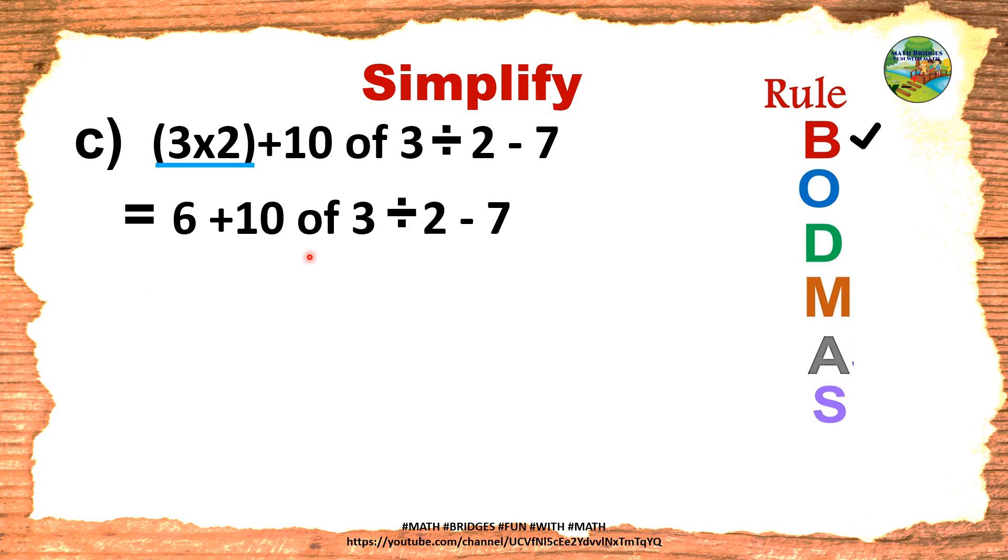Of, is there in the question? Yes, here. Underline. So 10 of 3. As discussed, of means into. 10 into 3 the meaning. So directly I am taking here, 10, 3 is 30. Remaining all signs including signs will be same. Now of is over, tick it. Next part is division. Is there division in the question? Every time you have to question yourself. Yes. Underline. So solve this. 6 plus 30 divided by 2 is 15 minus 7 as it is. So division is over, tick it.